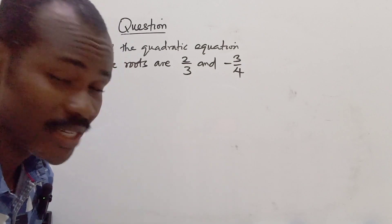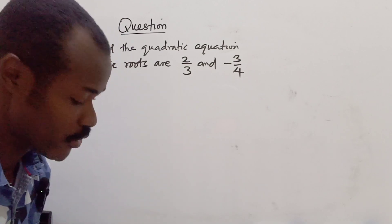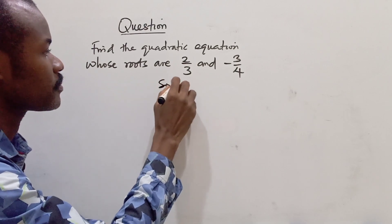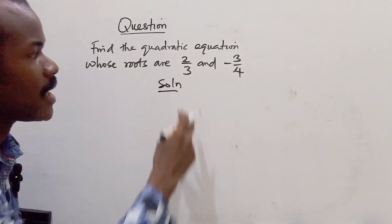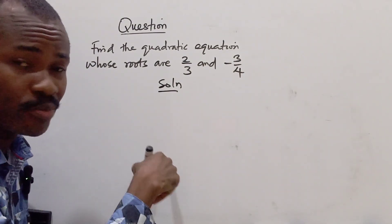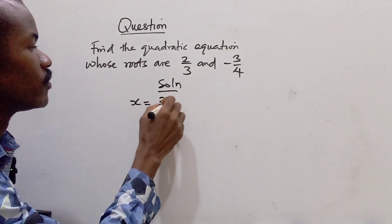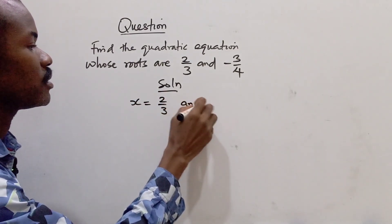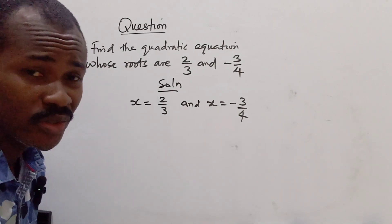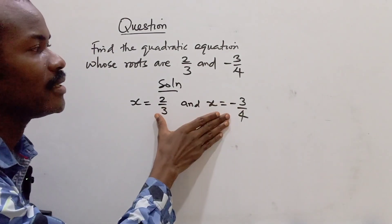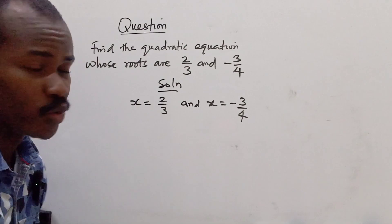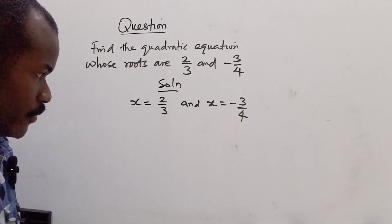If you don't mind, you can pause this video and attempt the question before you come back. Now for our solution, the given quadratic equation is based on it being a reverse problem. x equals 2/3 and x equals -3/4. When you solve the quadratic equation, you arrive at this. So from this, we can now begin to solve the problem.